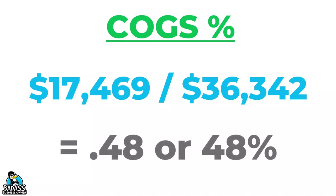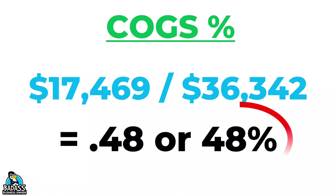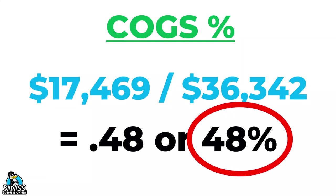This gives us 0.48. Now you might recall from your earlier math classes — you just want to move the decimal over two places to get the percentage. So that tells us it's 48%. For the math nerds, technically you're multiplying by 100, but moving the decimal is way easier.